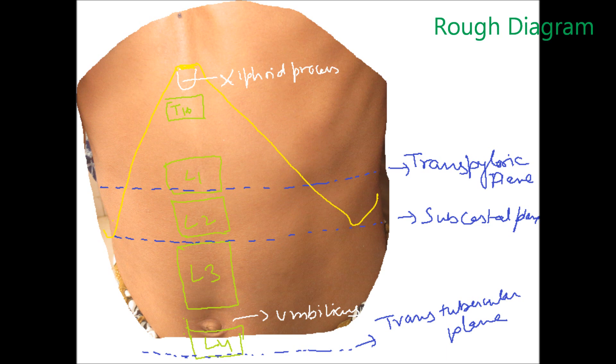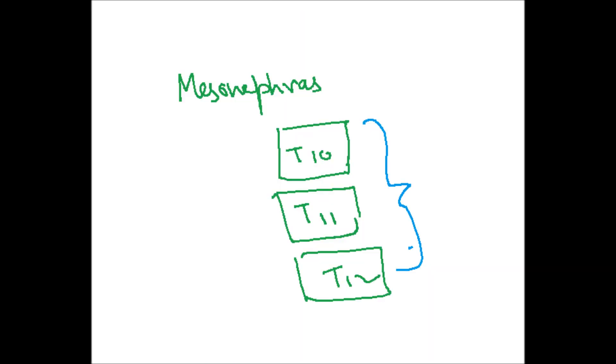Umbilicus lies between L3 and L4. Trans tubercle plane is lying below in the upper border of L5 vertebra. So here you can have a rough idea. Now we will tell you what happens.